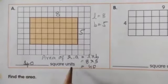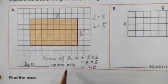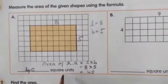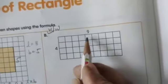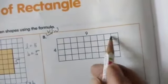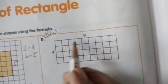40 square units is the answer. Now part B, do it as homework. Length is 9 and breadth is 4.